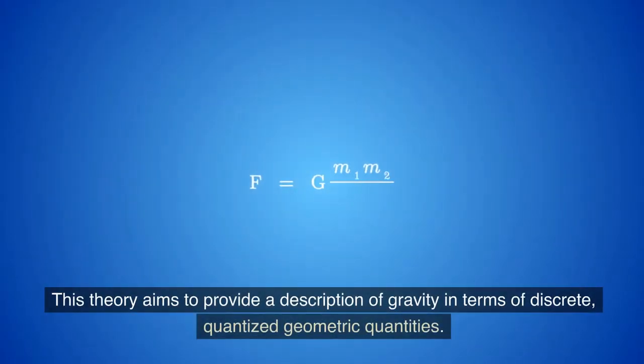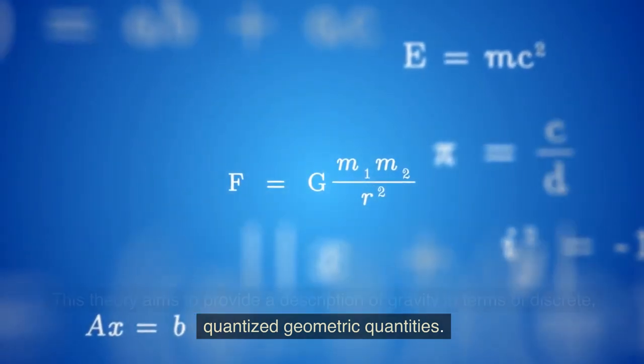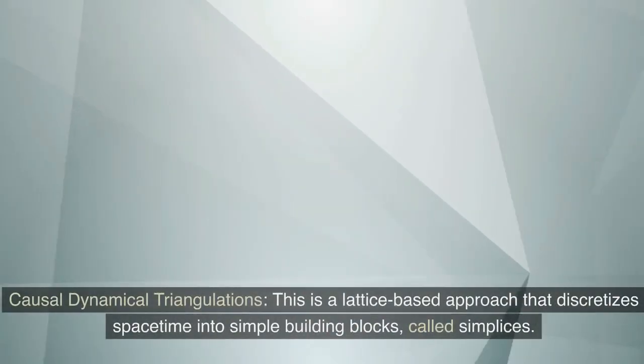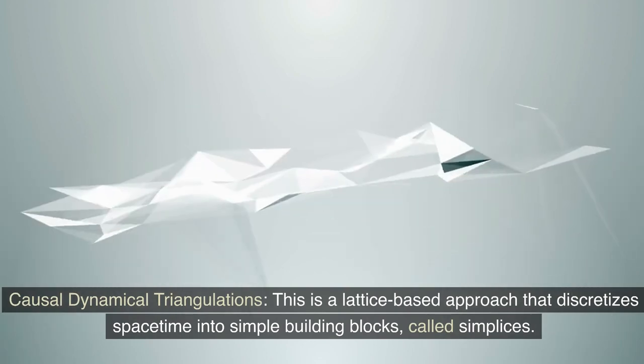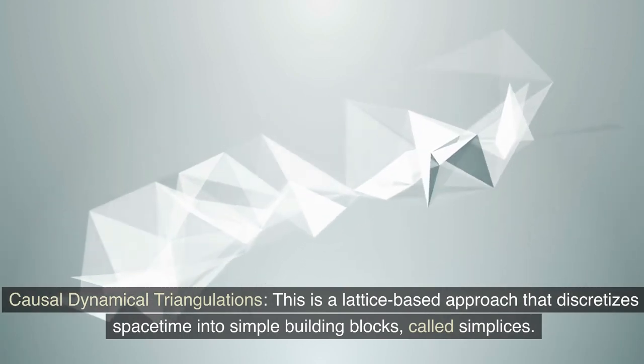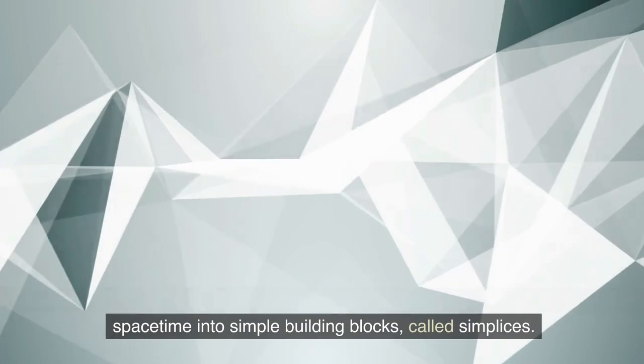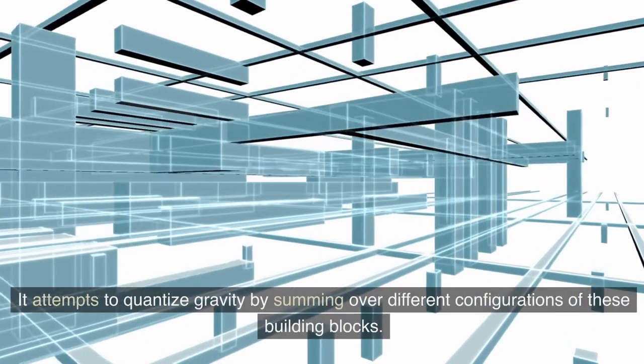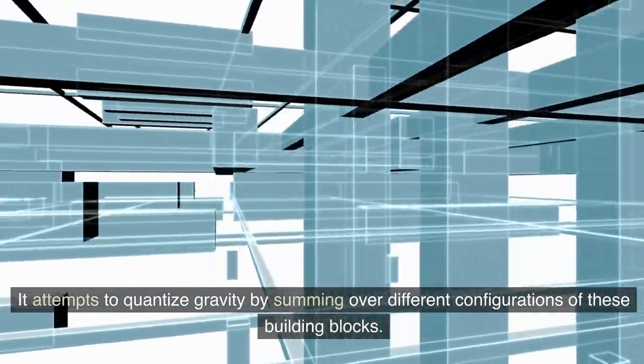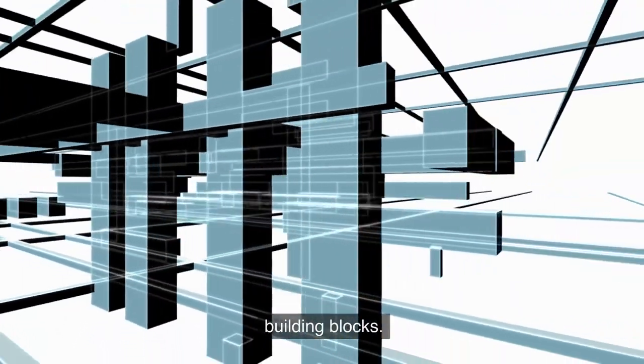This theory aims to provide a description of gravity in terms of discrete, quantized geometric quantities. Causal dynamical triangulations. This is a lattice-based approach that discretizes spacetime into simple building blocks, called simplices. It attempts to quantize gravity by summing over different configurations of these building blocks.